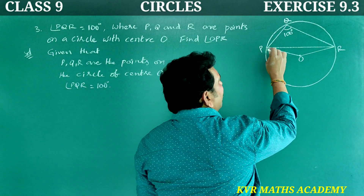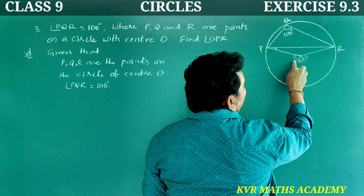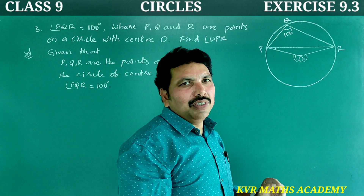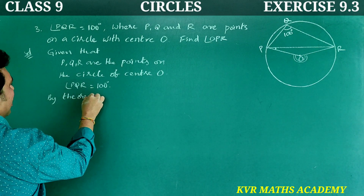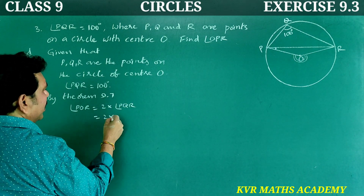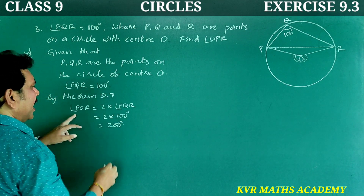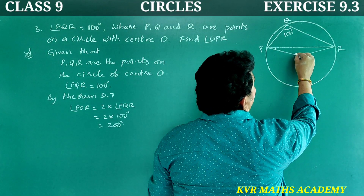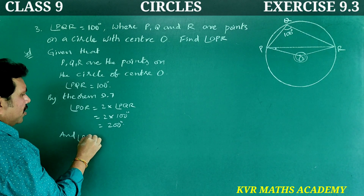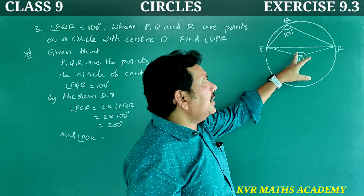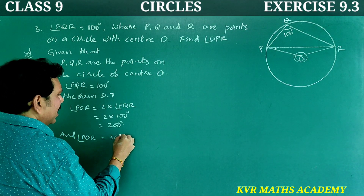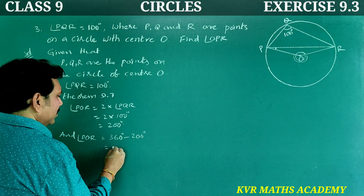By Theorem 9.7, angle POR in the segment PR is equal to 2 times angle PQR, that is 2 into 100, which equals 200 degrees. Since the angle at the center for the remaining segment is 360 minus 200, angle POR equals 160 degrees.